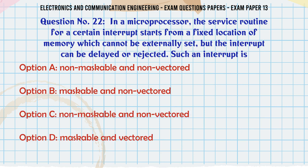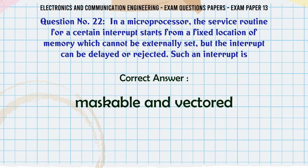In a microprocessor, the service routine for a certain interrupt starts from a fixed location of memory which cannot be externally set, but the interrupt can be delayed or rejected. Such an interrupt is: A: non-maskable and non-vectored, B: maskable and non-vectored, C: non-maskable and vectored, D: maskable and vectored. The correct answer is maskable and vectored.